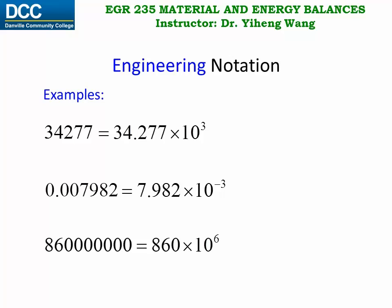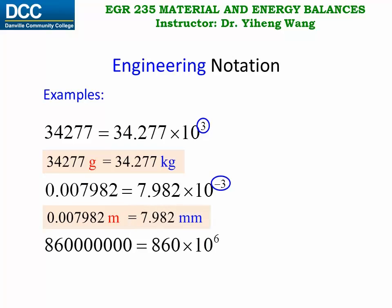For example, if we have a measurement of 34,277 grams, because of this exponent in engineering notation, we can easily convert that into 34.277 kilograms. Or if we have a measurement of 0.007982 meter, because of this exponent here, we can easily convert that into millimeter. And lastly, if we have a measurement of 860 million Pascal, because of this exponent, we can easily convert that into megapascal.